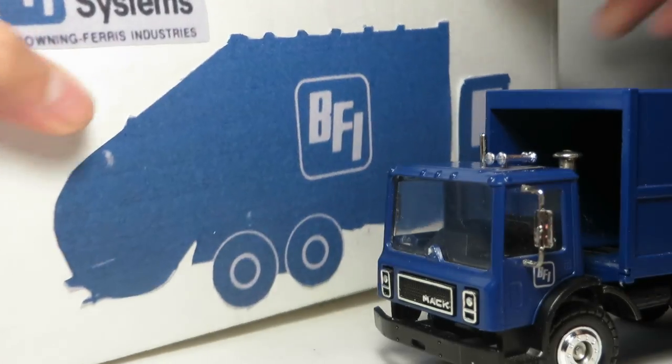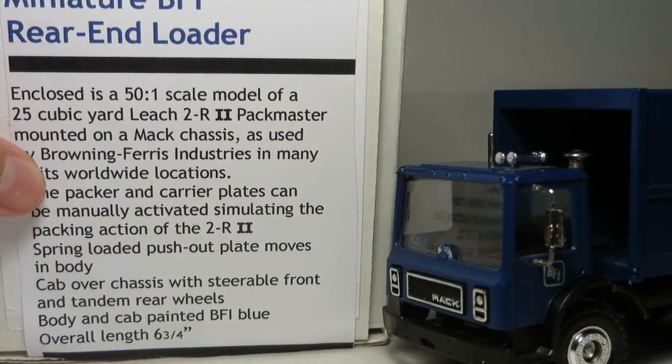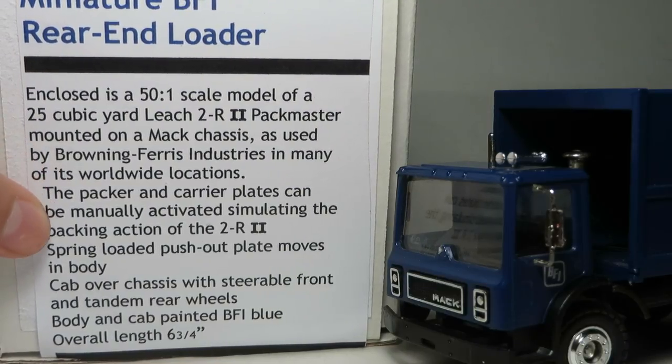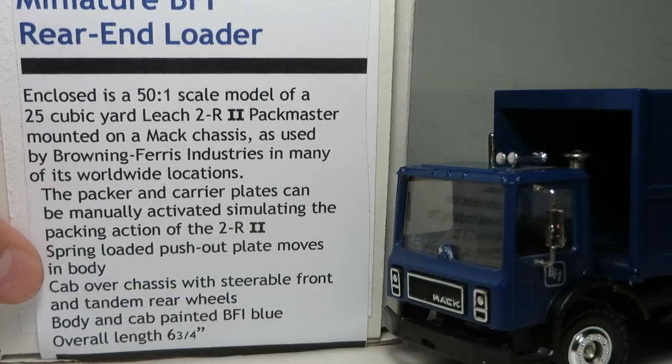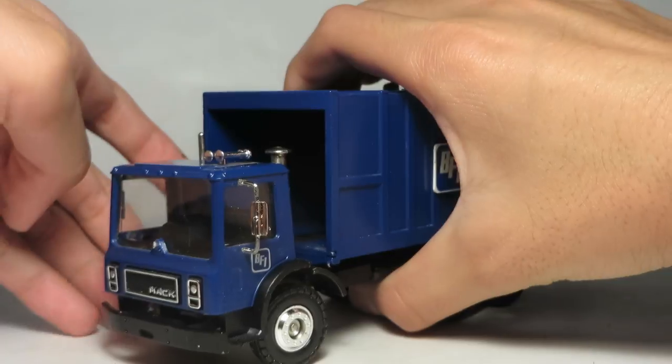Now let's look at the features. It's a 25 cubic yard Leech 2R2 Packmaster. It's got a spring-loaded ejection panel and moving packer and carrier plates, steering front wheels, and a tilting cab. Let's get into this review.